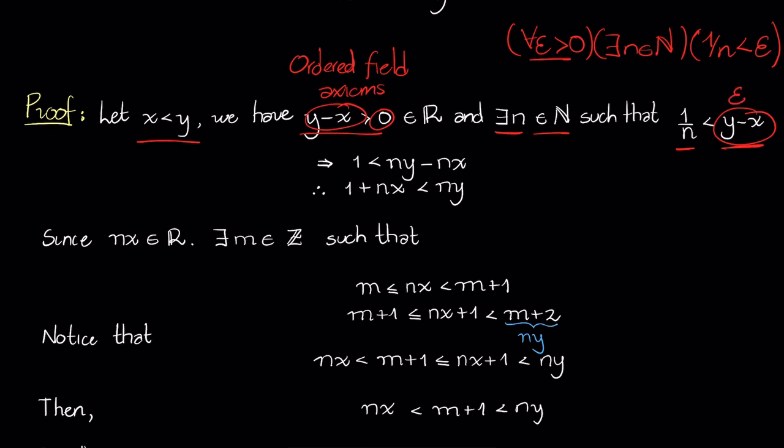We multiply both sides by n without affecting it, because n is positive, n is a natural number. Then we modify a little bit, we add nx to both sides, and we end up with this inequality.